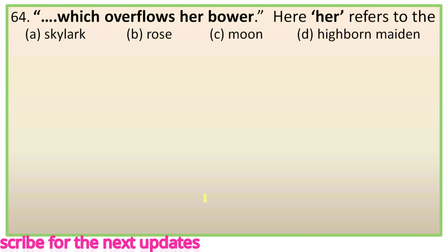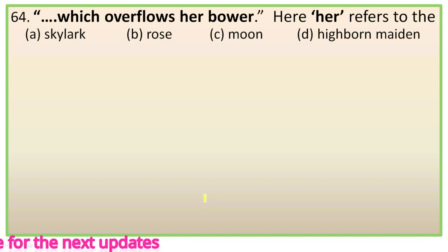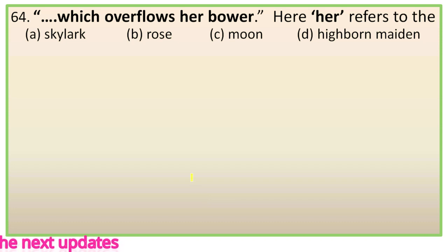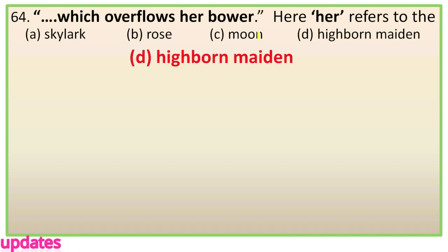Question 64: 'With music sweet as love which overflows her ___' — here 'her' refers to options: Skylark, Rose, Moon, Highborn Maiden. It is obviously the Highborn Maiden because she is kept in a palace tower and soothes her lovesick heart with music. Music substitutes love, and the lovesick heart is comforted with music. So 'her' refers to the Highborn Maiden.